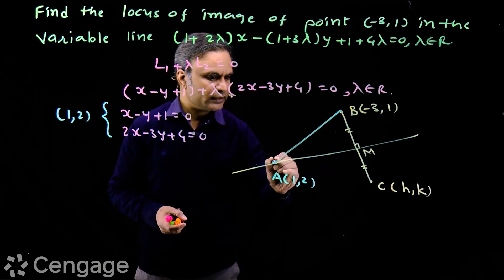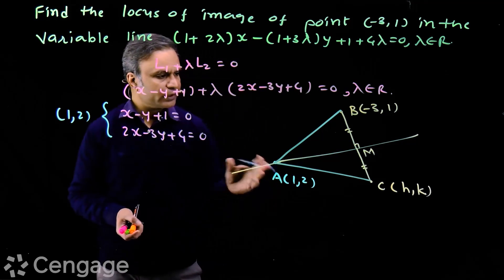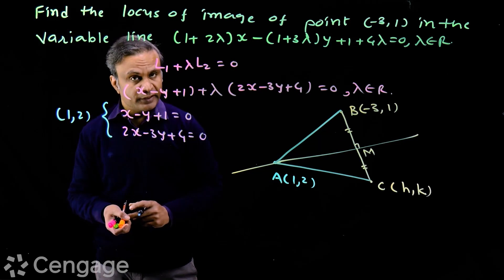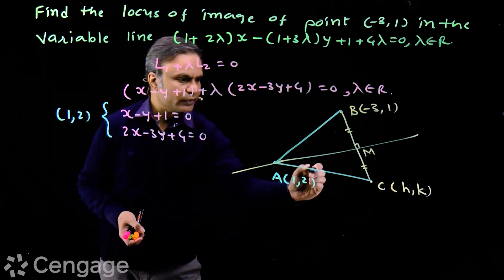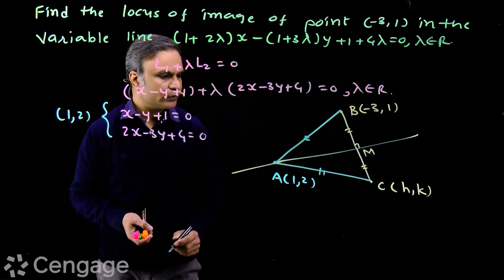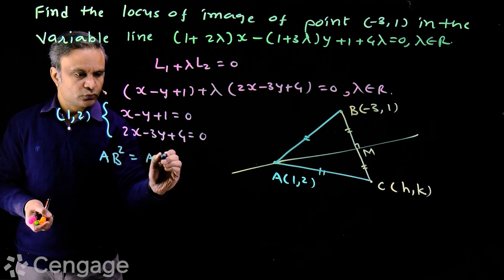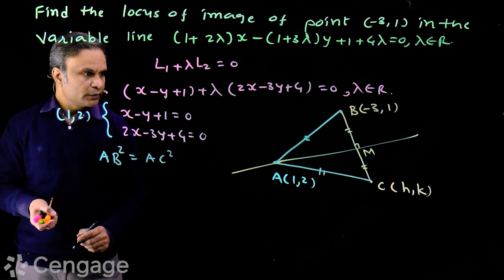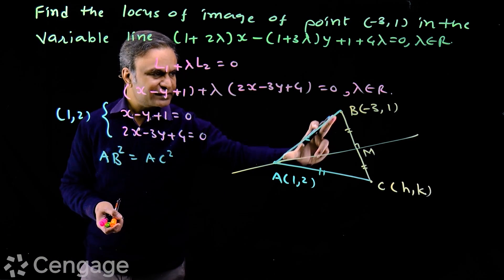Now in all the cases we have AB is equal to AC. In all the cases we have these two distances equal. So we have AB² = AC².